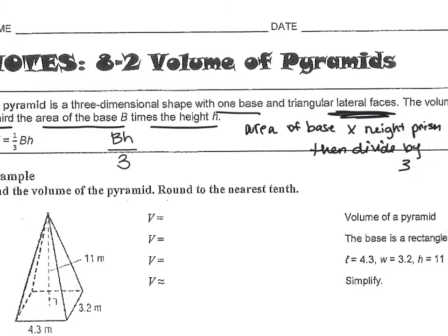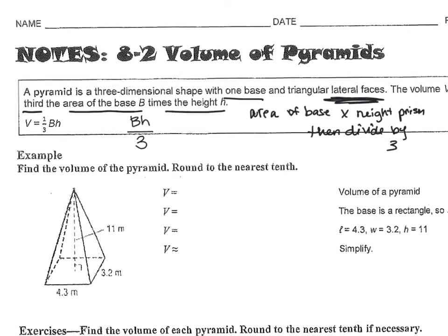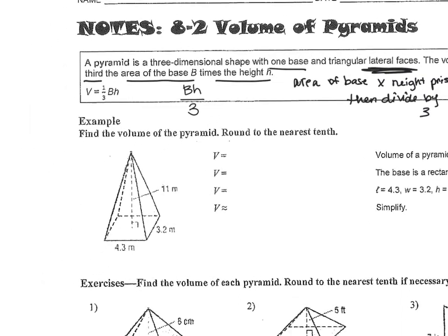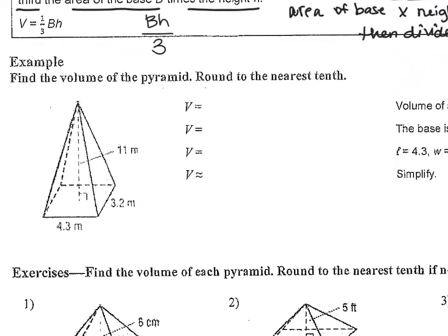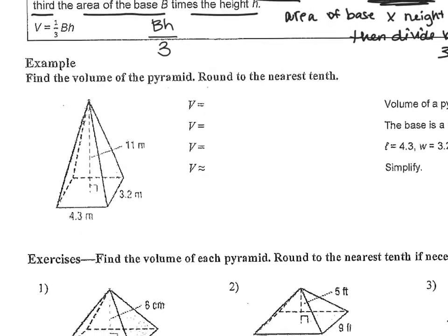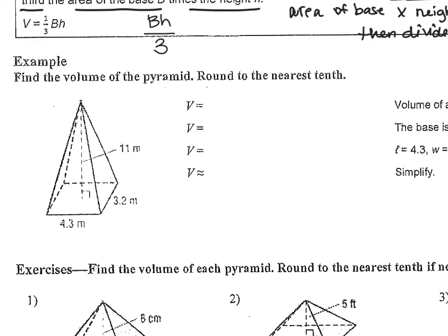Area of the base times the height of the pyramid, then divide by three. Let's write this formula down. Volume of a pyramid: volume equals one-third times the area of the base times the height, or area of the base times the height divided by three.